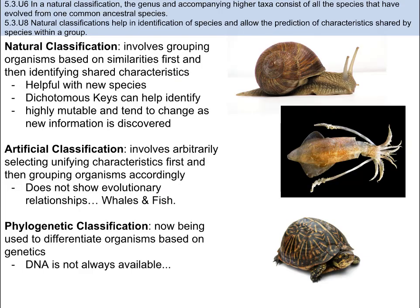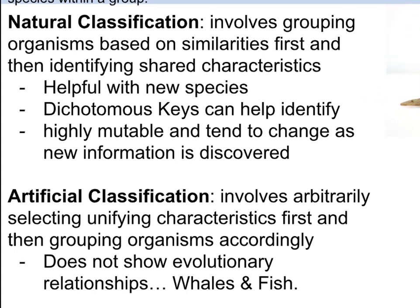Before getting there, it's important to break down the three different types of classification. Historically, there have been two types: natural and artificial. Natural classification involves grouping organisms based on similarities and identifying shared characteristics. According to a natural classification system, all members of a particular group would have shared a common ancestor. This means natural classification schemes can be used to predict characteristics shared by species within a group — some pretty hefty advantages. One disadvantage is that they are highly mutable and tend to change as new information is discovered, but that is science, and that is okay.